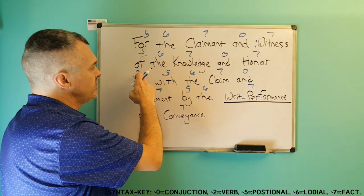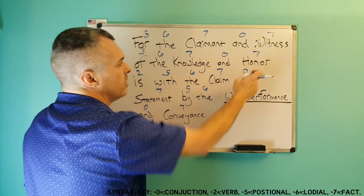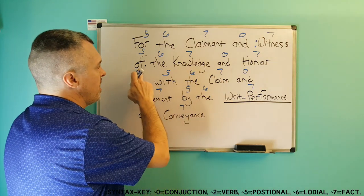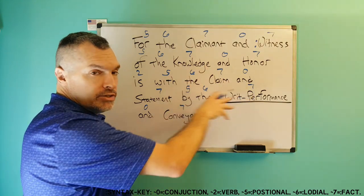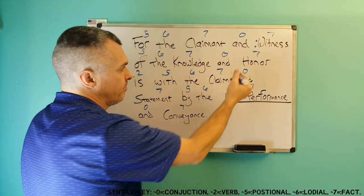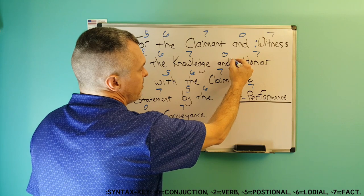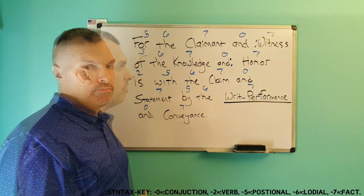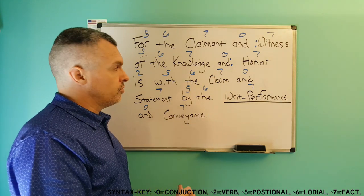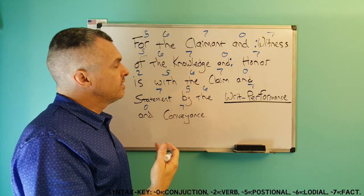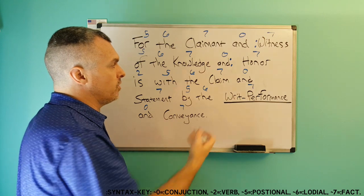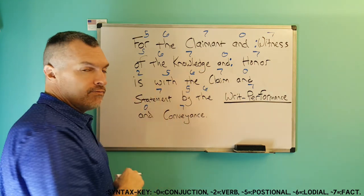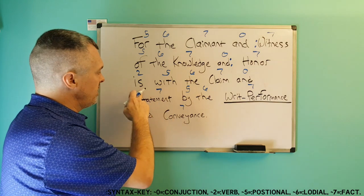Moving on to the next phrase: 'of the knowledge and honor.' These two facts have been positioned by 'of the.' 'And' is just a bridge tying them together. Some people like to put a colon here — that's fine. I have closure that 'and' has a neutral syntax value. Therefore, it is simply a bridge between 'knowledge' and 'honor,' positioned by 'of the.' And now we have our verb: 'is.'